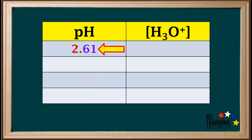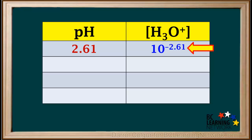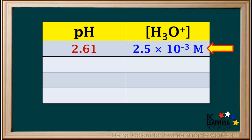The given pH of 2.61 has two significant figures. The concentration of hydronium is equal to 10 to the power of negative 2.61. Since 2.61 is a pH value, it has two significant figures, so the final answer comes to 2.5 times 10 to the negative 3 molar when rounded to two significant figures. Note that 0.0025 molar would also be the correct answer for this one.